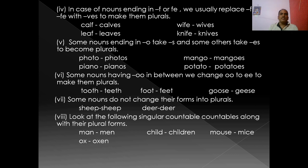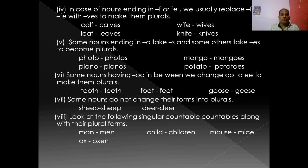Some nouns having OO in the middle — we change OO to EE to make them plural: tooth → teeth, foot → feet, goose → geese. Some nouns do not change their forms into plurals at all: sheep is both singular and plural, and deer is both singular and plural.